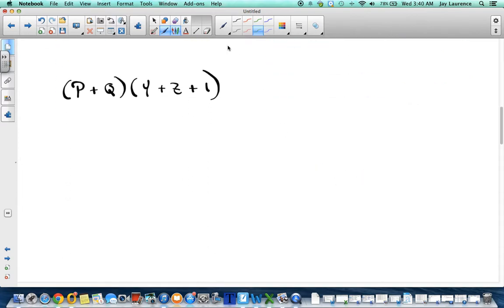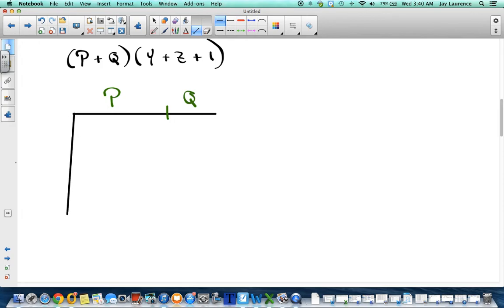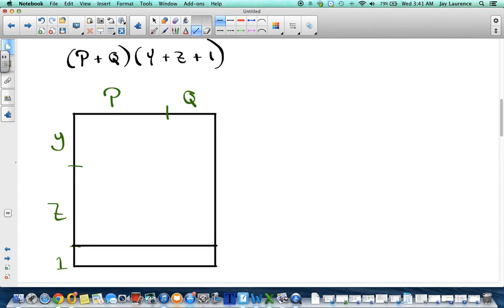All right. Let's try it on one that's a little bit longer. Quantity of p plus q times the quantity of y plus z plus 1. Now, it's longer, but it is not more difficult. I need a p plus q segment. So, I'm going to draw that. And I'm going to put a little mark here. And I'll make that the p segment, part of the segment, and that will be the q. So, this segment is p plus q units long. Now, I need another segment. I need a y plus z plus 1 segment. So, I'm just going to draw a nice segment here. And I'm going to call this part y. I'm going to call this part z. And this part 1. And now all I do is finish the rectangle. There we go. All right.